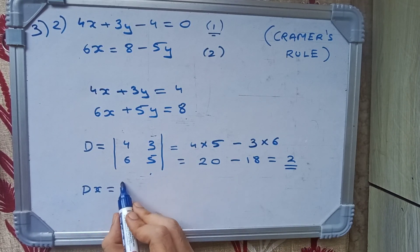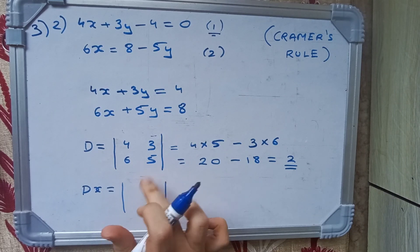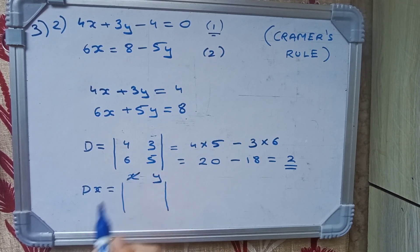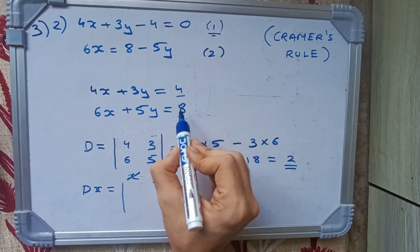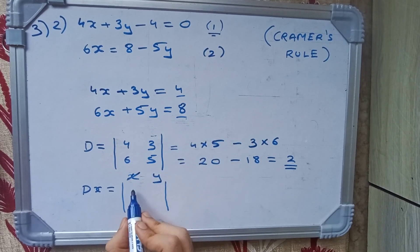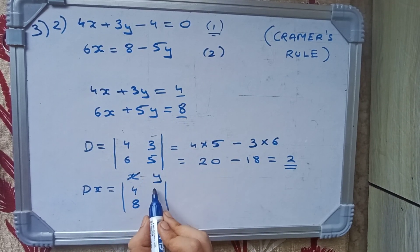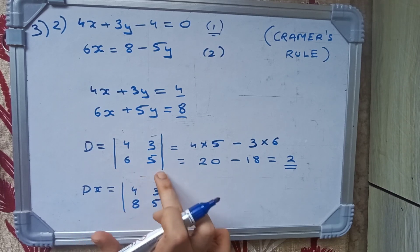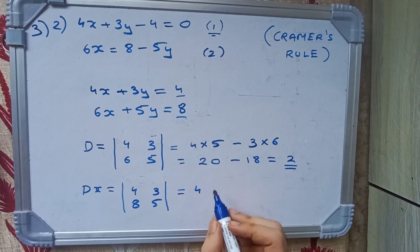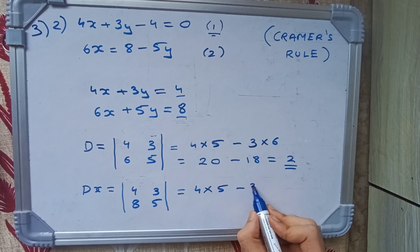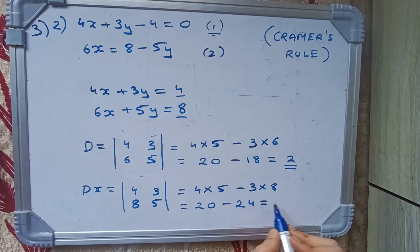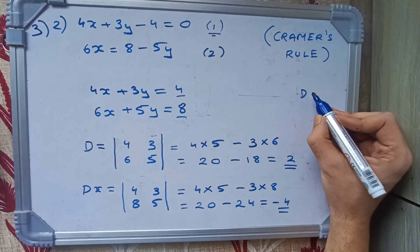Now we find Dx. We replace the x-column with the constants. The y-values remain 3 and 5, and the constants are 4 and 8. Cross multiplying: 4 × 5 minus 3 × 8 equals 20 minus 24, which gives us Dx = -4.